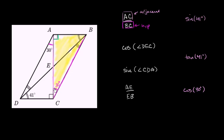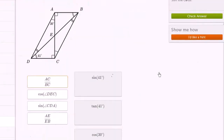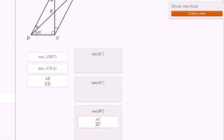What trig function, when applied to 30 degrees, equals the adjacent side over the hypotenuse? Let's write down SOHCAHTOA. Sine of an angle is opposite over hypotenuse; cosine of an angle is adjacent over hypotenuse. So cosine of 30 degrees equals the length of the adjacent side AC over the length of the hypotenuse BC. This ratio is equal to cosine of 30 degrees, so let's drag it into that bucket.